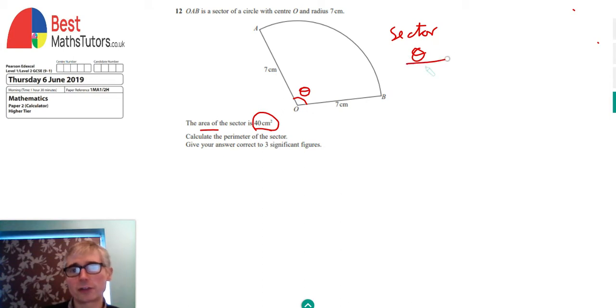And it's that over 360 times by the area of a circle, pi r squared. So that's the general equation for the area of a sector where theta is the angle between the two radii.